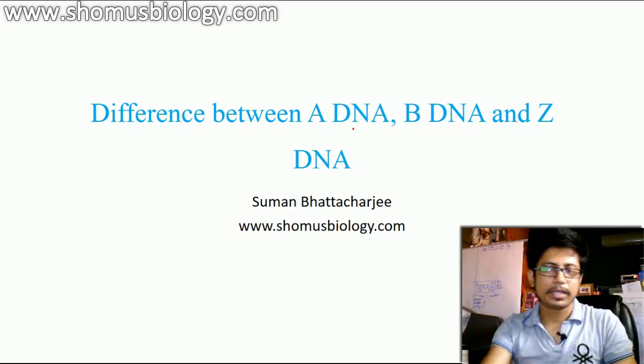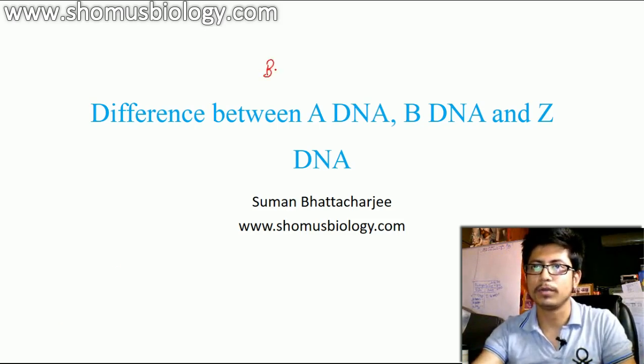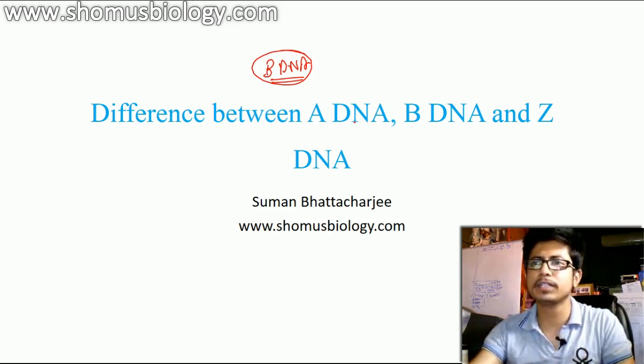So normally, whatever the normal DNA structure we know of is B DNA, that is the most common form of the DNA that we know of. But before understanding the difference between A, B and Z DNA, you first need to know the basic structure of a DNA.